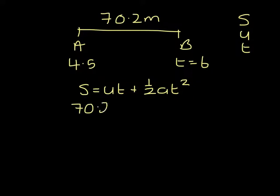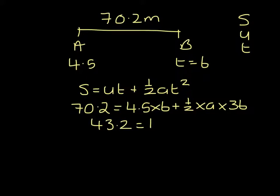So 70.2 has to equal 4.5 times 6 plus 1 half times A times T squared, which is 36. So I have 70.2 and I take away 4.5 times 6. I'm left with 43.2, which has to equal 18A. Dividing that by 18, I get that the acceleration is 2.4 and our units are metres per second squared.